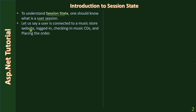Let's say a user is connected to a music store website, logged in, checking in some music CDs, and then finally placing the order. The user is performing multiple actions: navigating to the website that sells music CDs, logging in with their username and password, adding some music CDs to the shopping cart, and finally placing the order — that means they pay the amount to purchase those CDs.